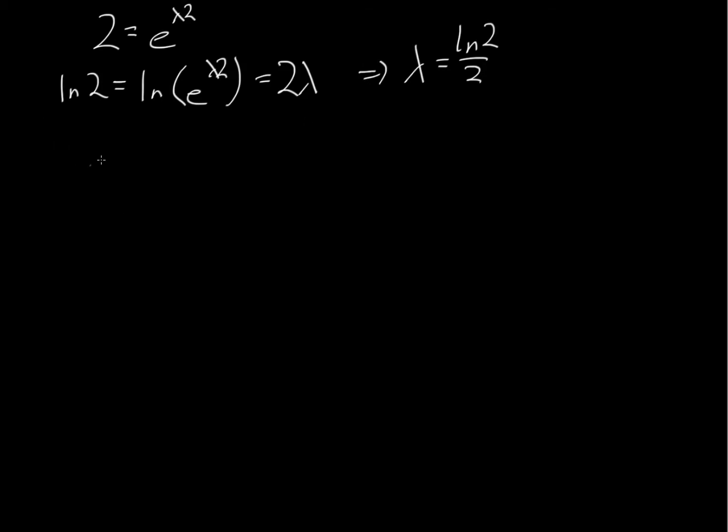So now we're trying to find p of t equal to 3p-naught. So 3p-naught is going to equal p-naught times e to the lambda t.